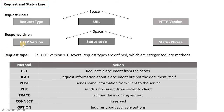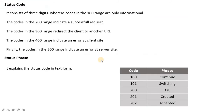The response line, also called the status line, is the first part of the response message sent by the server. It contains the HTTP version, a status code, and a status phrase. The status code is a three-digit number. In the 100 range, it indicates informational responses; in the 200 range, it indicates a successful request.